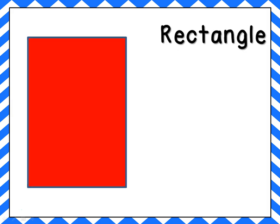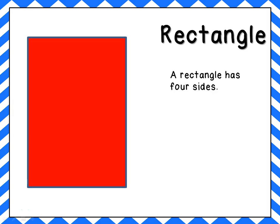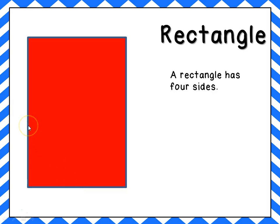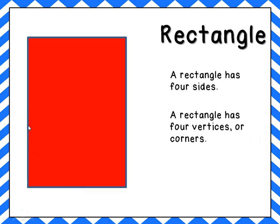The rectangle. A rectangle has four sides, just like the square: one, two, three, four. A rectangle also has four vertices or corners: one, two, three, four.